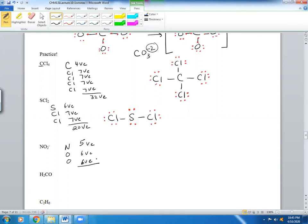So you have N has 5 and O has 6. Let's check. Do we have any charges we have to worry about? Yeah, that's a negative right there. So that negative means I have to add 1 electron. So I have 1 plus 6. So I have 7, 13, 5, 18. 18 is my total valence electrons. Which atom is central? N.